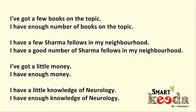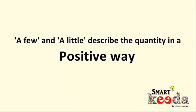Here are some more examples. 'I have got a few books on the topic' means I have enough books on the topic. 'I have a few shirma fellows in my neighborhood' suggests I have a good number of shirma fellows nearby. 'I have got a little money' suggests I have enough money. 'I have a little knowledge of neurology' suggests I have enough knowledge of neurology. So 'a few' and 'a little' describe quantity in a positive way.